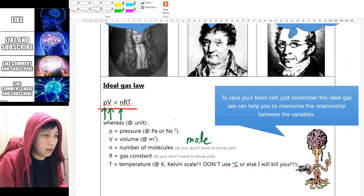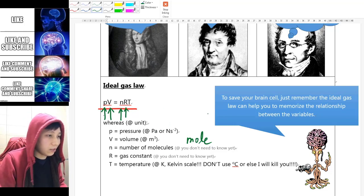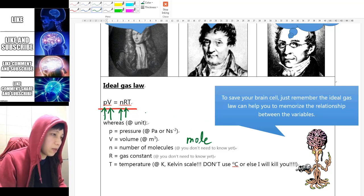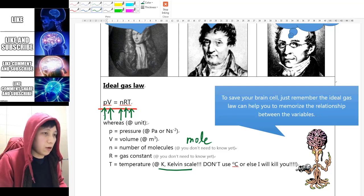If you have a fixed amount of molecules, then it does not change. R is just a constant, just like pi is universal and is always the same. Finally, T is the temperature in a unit called Kelvin, not Celsius. Well, we'll talk about this in the future.